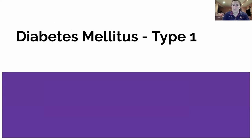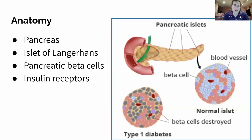Most of the people you're going to be treating, or sitting on the boards with diabetes, are going to be type 2, which is the insulin resistant one — I'll do a video on that later. But today we're doing type 1, which a lot of people refer to as juvenile diabetes because it's more common in children. Let's go to the anatomy.